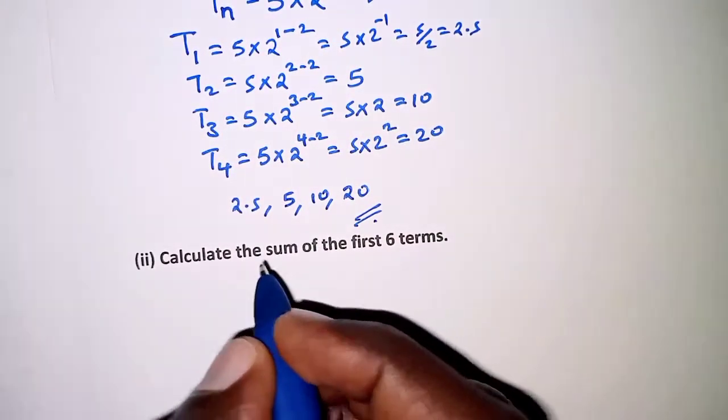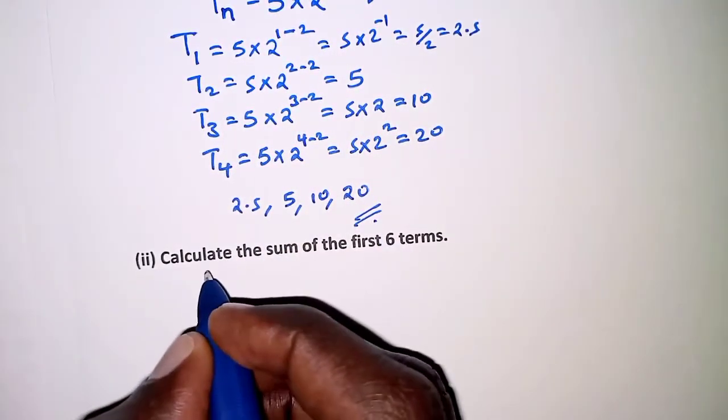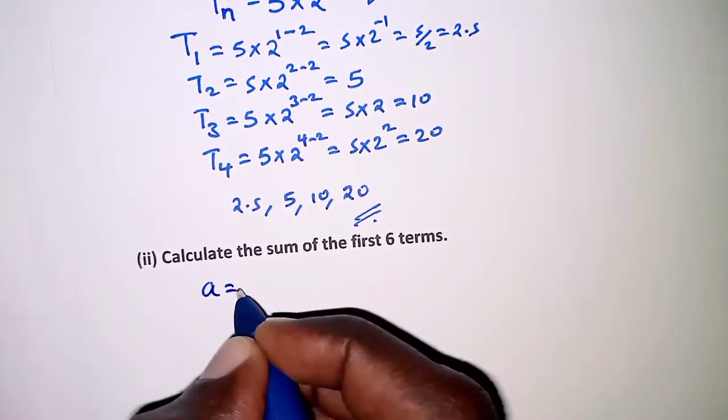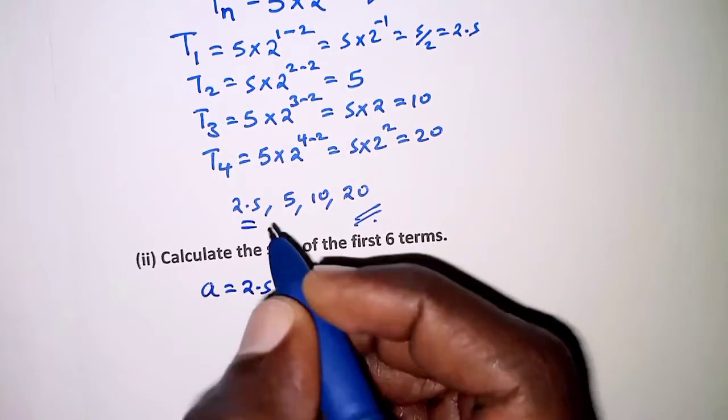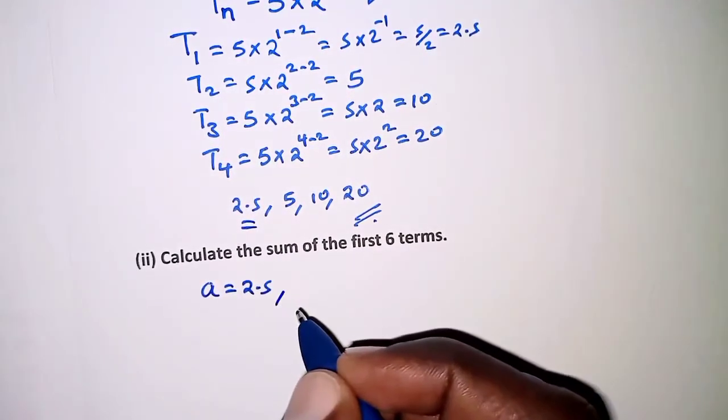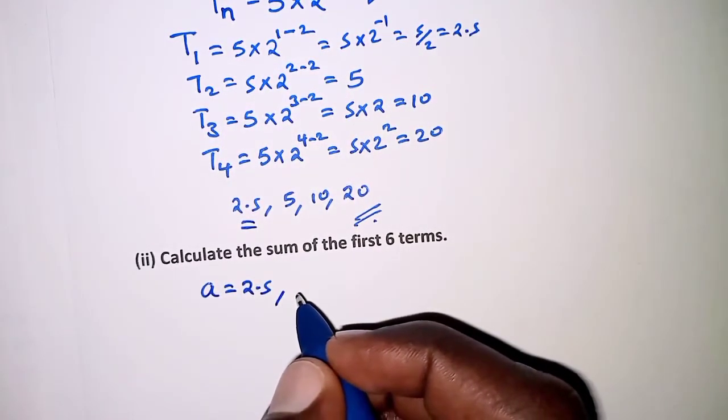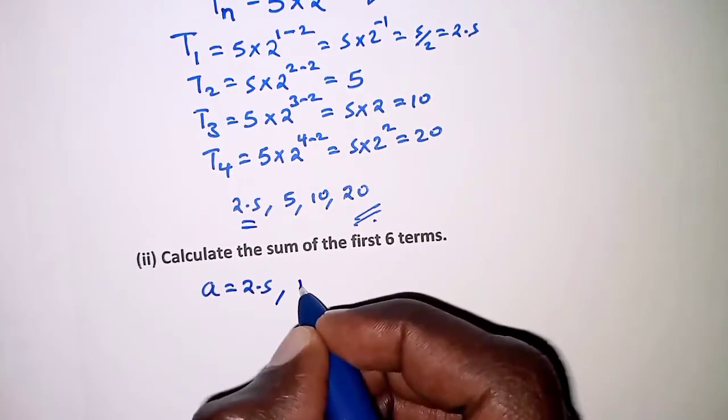Before we do that, the first thing is to identify the first term, and the first term is 2.5 right there. And then given that it's a geometric progression, we are going to get the common ratio,